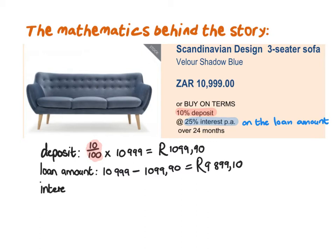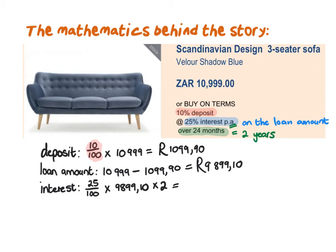So our next step is to work out the interest amount that you're going to pay. That is 25% of the loan amount, and you don't only pay it for one year — you pay it for two years. I need to convert 24 months into years because the interest is per annum, so I multiply by two years. This gives me an interest amount of R4,949.55. You need to pay not only R9,899.10 but also an additional R4,949.55 in interest, because of the leniency to pay over two years.